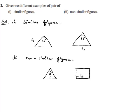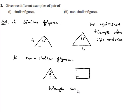So we can say that these two are examples for non-similar figures. So finally we can say that similar figures examples are two equilateral triangles with side variation and non-similar figures example is a triangle and a square.